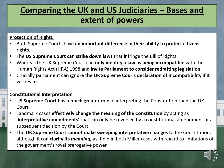Both Supreme Courts have an important difference in their ability to protect citizens' rights. The US Supreme Court can strike down laws that infringe the Bill of Rights, whereas the UK Supreme Court can only identify a law as being incompatible with the Human Rights Act of 1998 and invite Parliament to consider redrafting legislation. Crucially, Parliament can also ignore the UK Supreme Court's declaration of incompatibility if it wishes to. Unlike the Bill of Rights in the US, the HRA is not entrenched in the British Constitution, so Parliament could pass a new law to modify it or scrap it completely. Similarly, Parliament could withdraw the UK from the ECHR if it wanted to, making it possible for Parliament to pass laws that infringe on human rights.